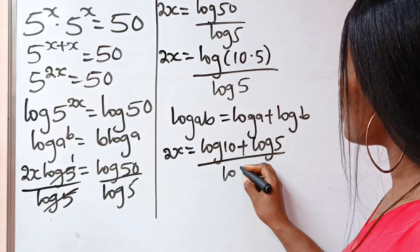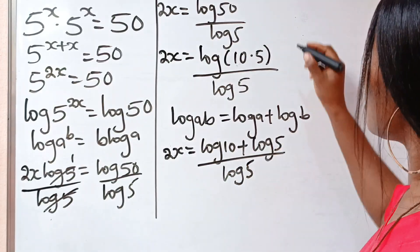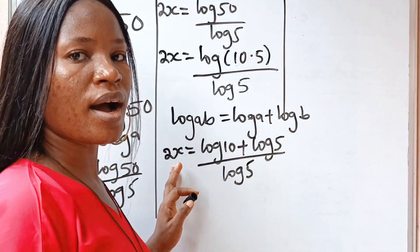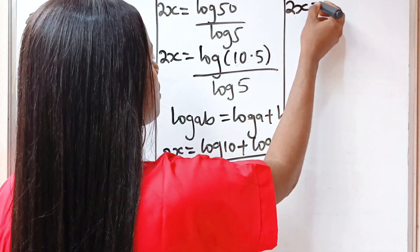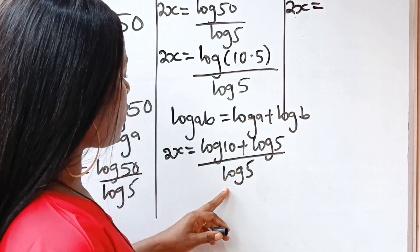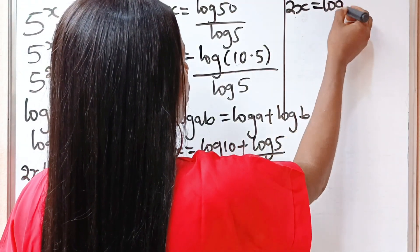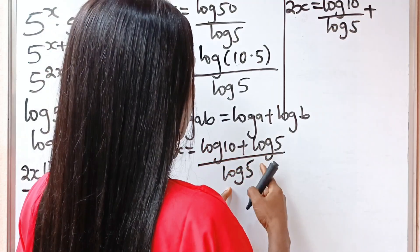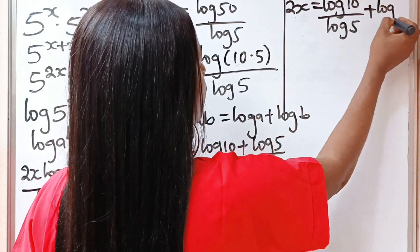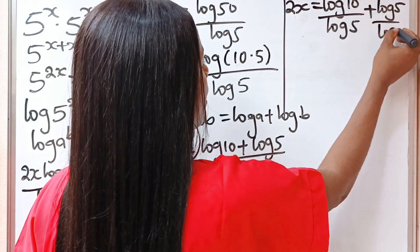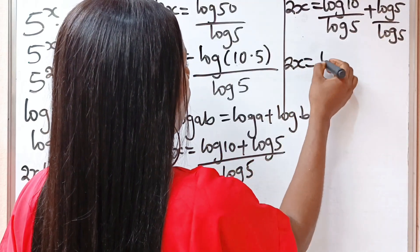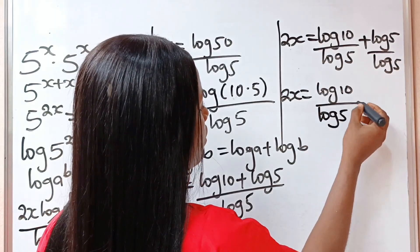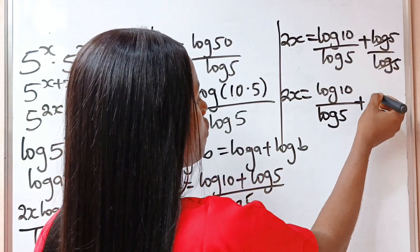Continuing, we now have 2x is equal to log 10 divided by log 5, plus log 5 divided by log 5. Log 5 divided by log 5 equals 1, so we have 2x is equal to log 10 over log 5, plus 1.